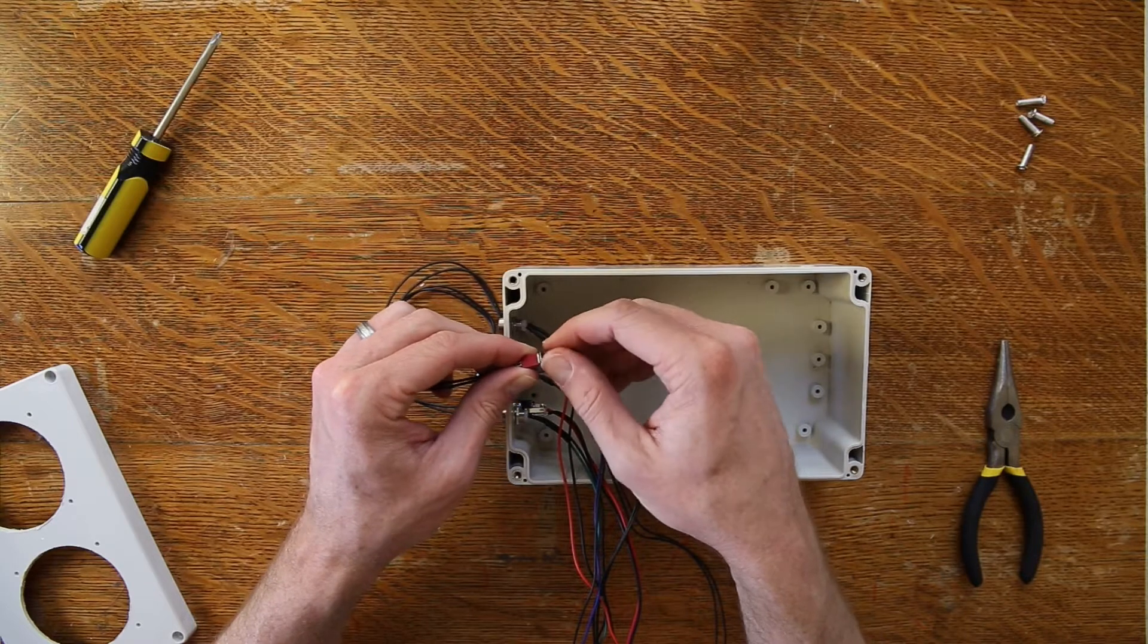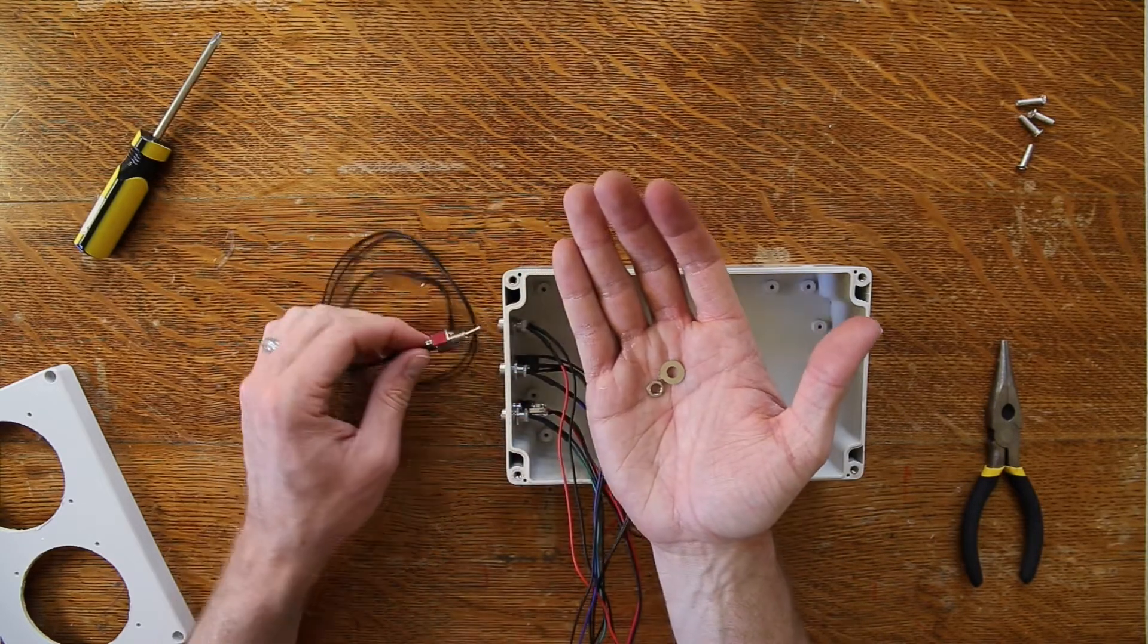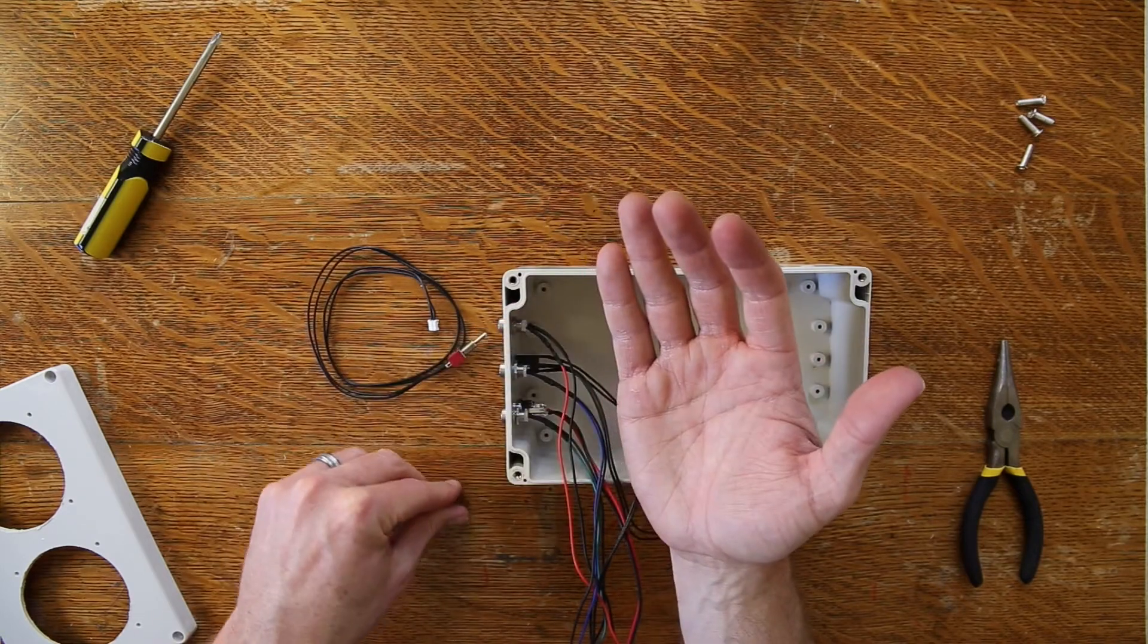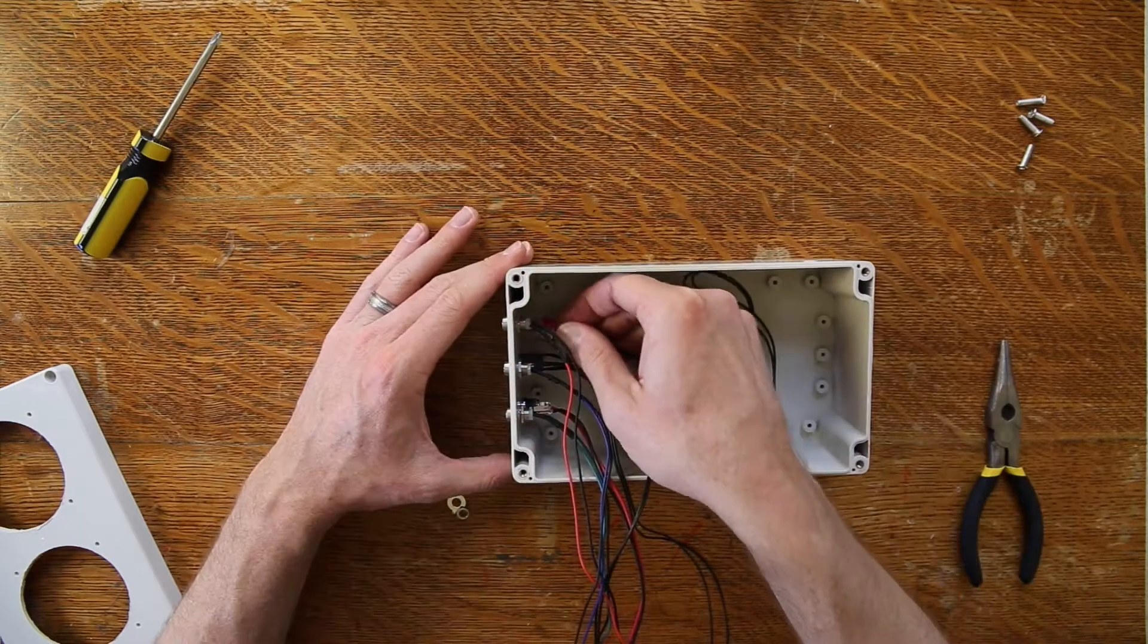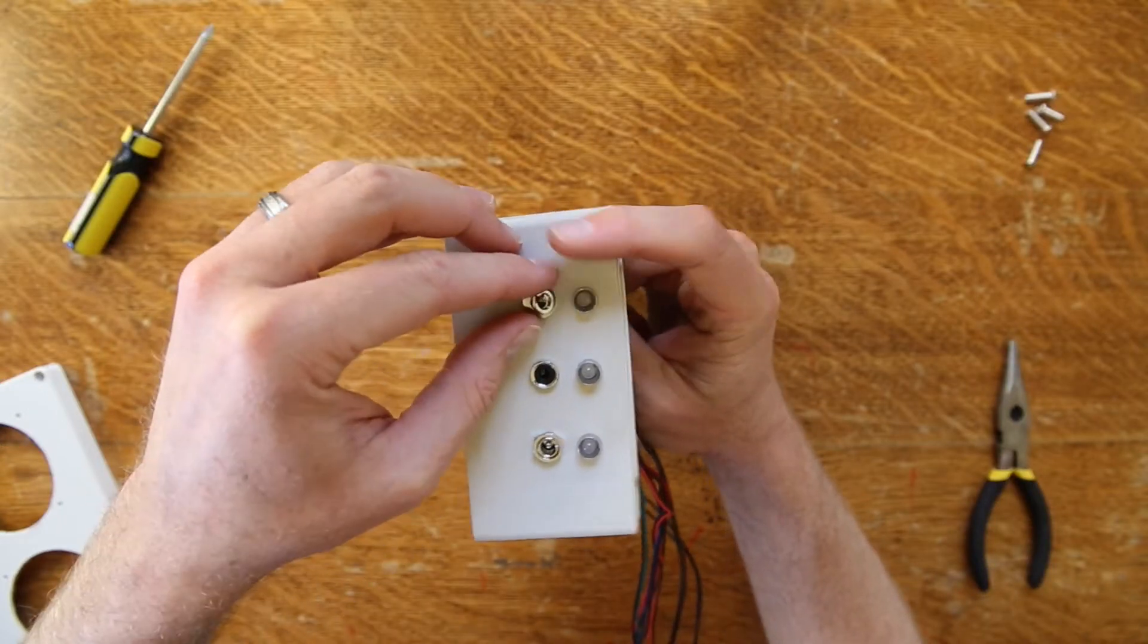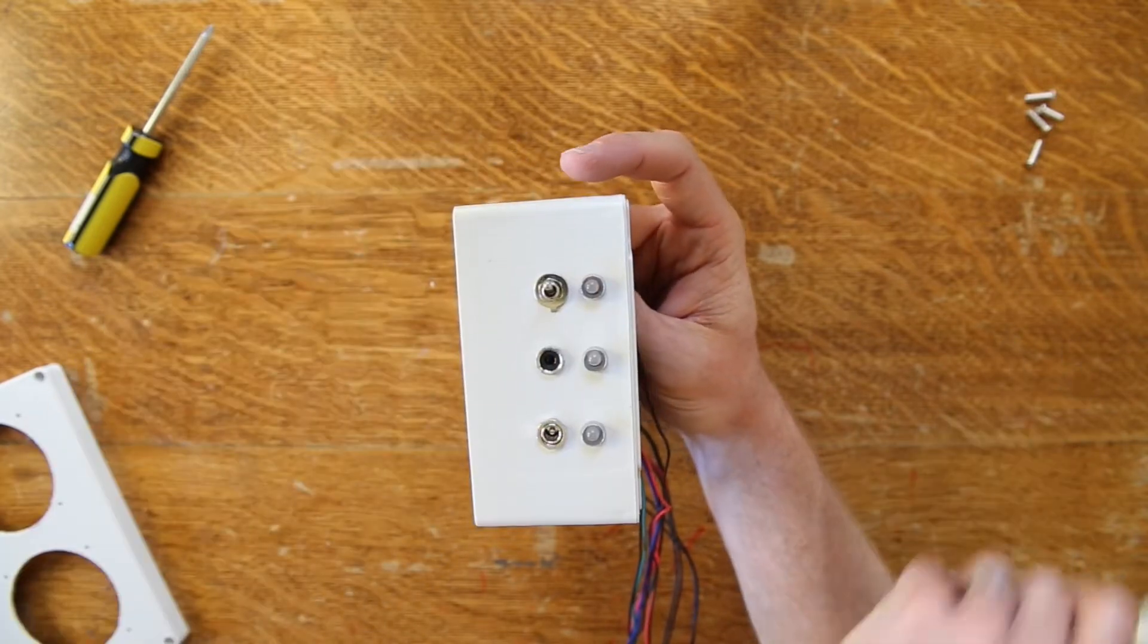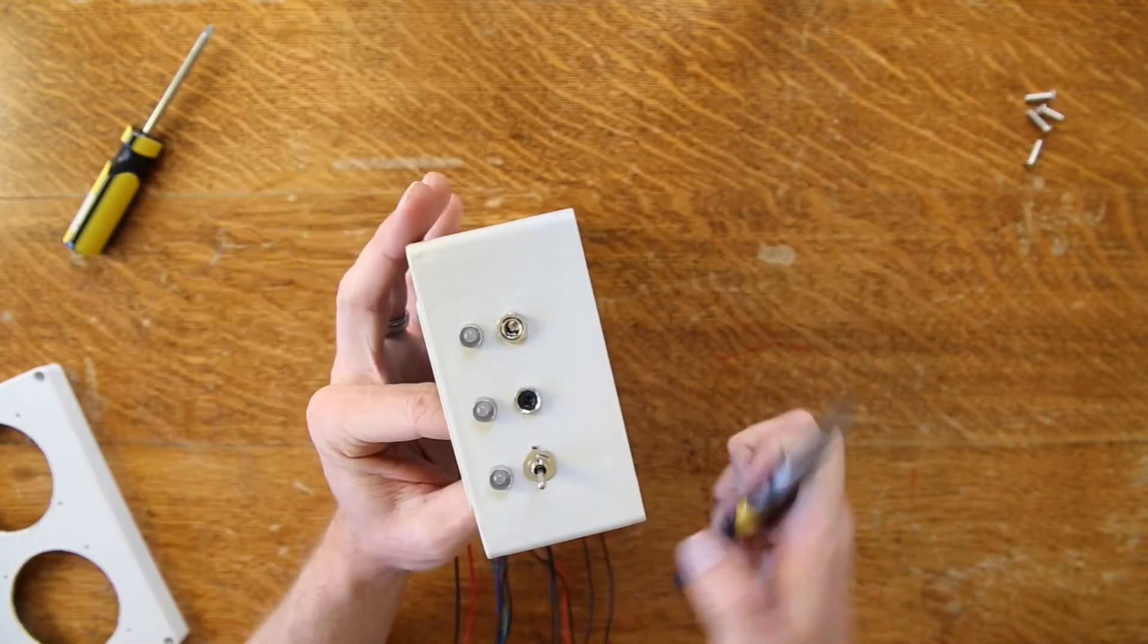Once that's tight, the last one will be the power switch. So again, take off the nut and the washer, and then push it through the inside. Then replace the washer and the nut. This washer has a notch in it, so be careful with that. And then tighten these down with the pliers.